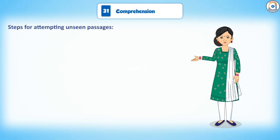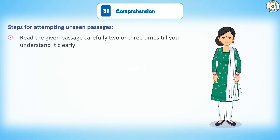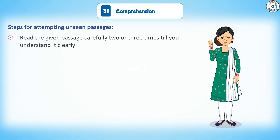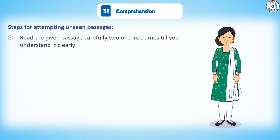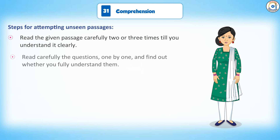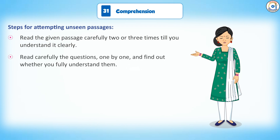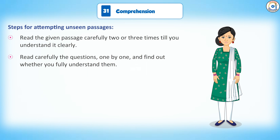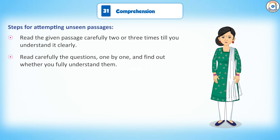Steps for Attempting Unseen Passages. Read the given passage carefully two or three times till you understand it clearly. Read carefully the questions one by one and find out whether you fully understand them.